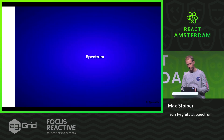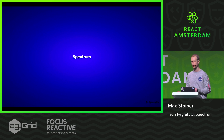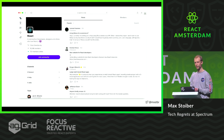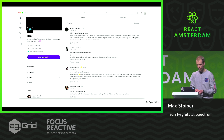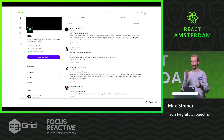I work at GitHub now because they bought my last company called Spectrum. I wanted to take this chance to reflect on the tech choices we made at Spectrum and the ones I regret. Spectrum is an open source chat app for large online communities. We started building it in 2017. Many open source projects use it — the Next.js community is on there, the Styled Components community is on there. It's essentially a real-time chat app, like Slack, but public and threaded.